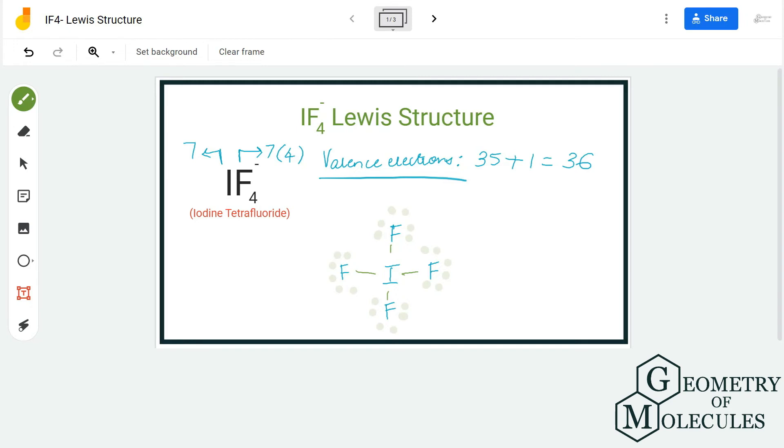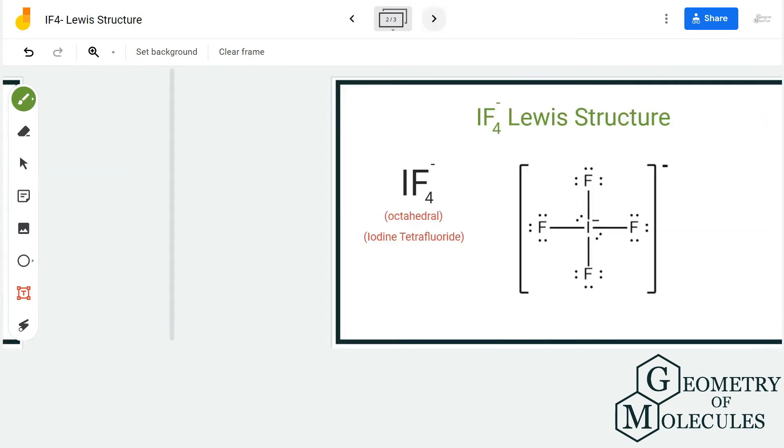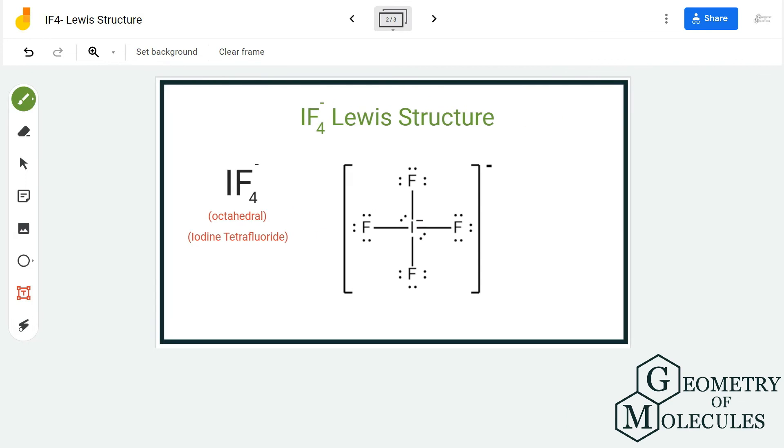So we will place two pairs of electrons on iodine atom like this. So now the Lewis structure of IF4- ion is this, in which there are complete octets of fluorine atoms and there are two lone pairs of electrons on iodine atom.